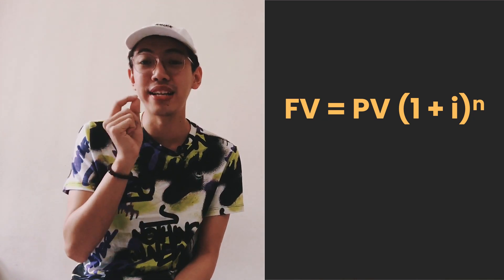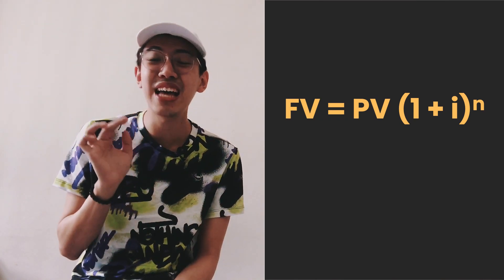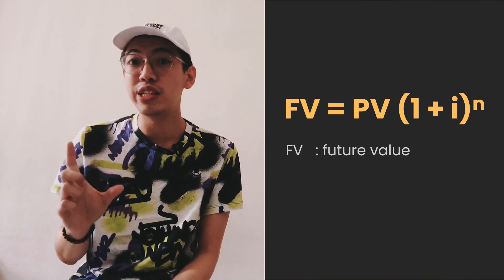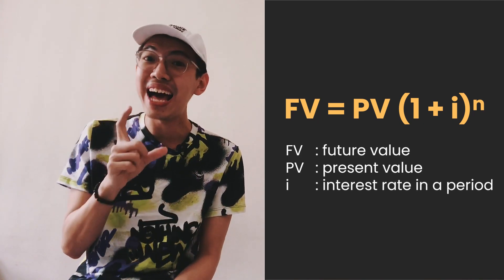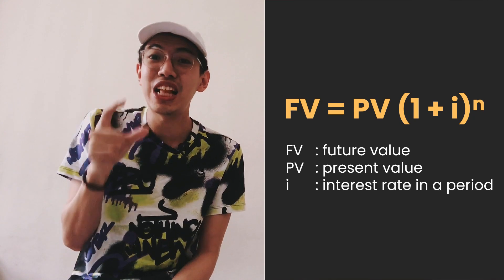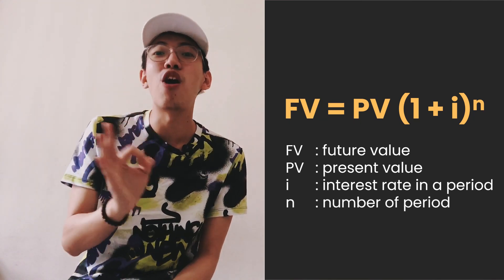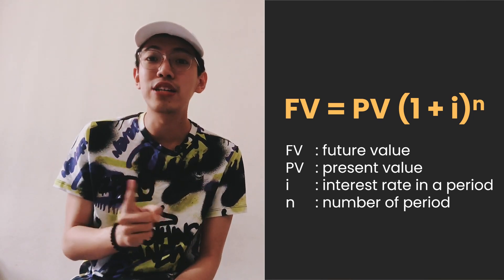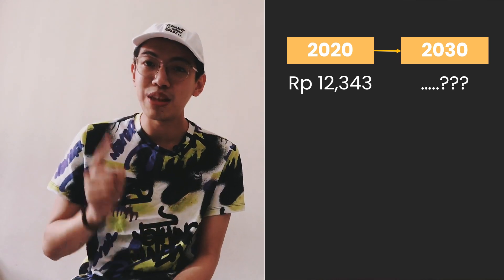The formula is: Future Value (FV) equals Present Value (PV) times (1 + i) to the power of n, where FV is future value, PV is present value, i is the interest rate per period, and n is the number of periods.